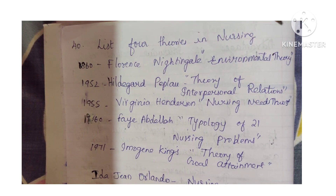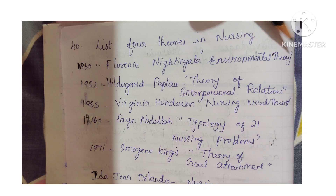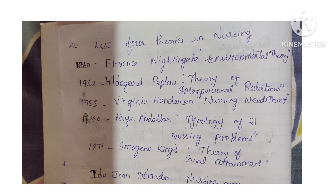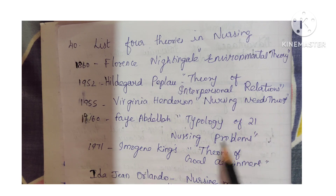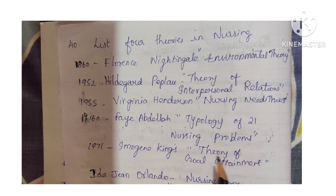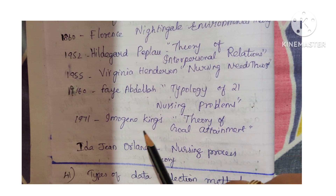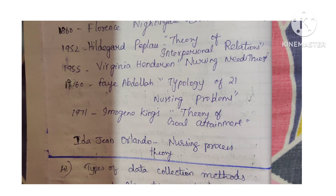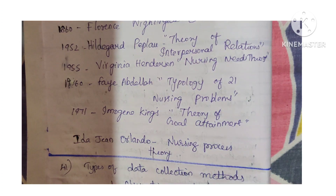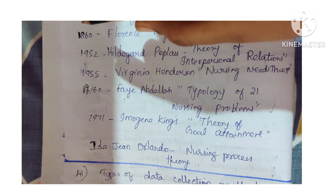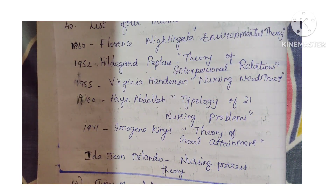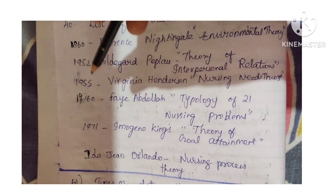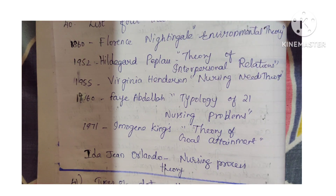Question 40: List 4 theories in nursing. Florence Nightingale's Environmental Theory (1860), Hildegard Peplau's Theory of Interpersonal Relations (1952), Virginia Henderson's Nursing Need Theory (1955), Faye Abdellah's Typology of 21 Nursing Problems (1965), Imogene King's Goal Attainment Theory (1971), Ida Jean Orlando's Nursing Process Theory. It is not necessary to write the years; writing only the theory names is sufficient.